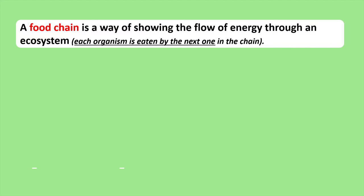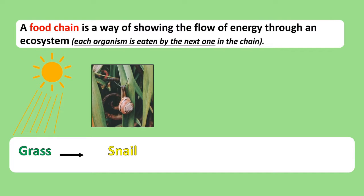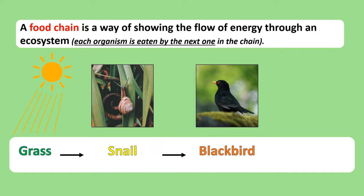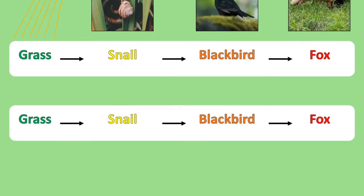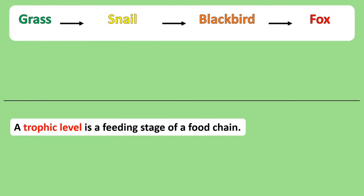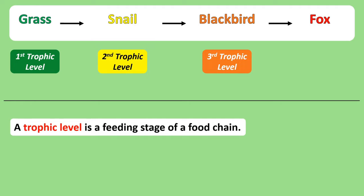Let's take a look at one example of a food chain. Grass is the first organism in this food chain — it uses photosynthesis to take in the sun's energy and stores it as chemical energy. Grass is eaten by a snail, so energy in the grass will now pass into the snail. A snail is eaten by a blackbird, so energy from the snail passes into the blackbird. And lastly, a fox eats the blackbird, so the fox will acquire the energy that was in the blackbird. The different stages of any food chain are called trophic levels. In this food chain, grass occupies the first trophic level, the snail is in the second trophic level, the blackbird is in the third trophic level, and the fox occupies the fourth trophic level.